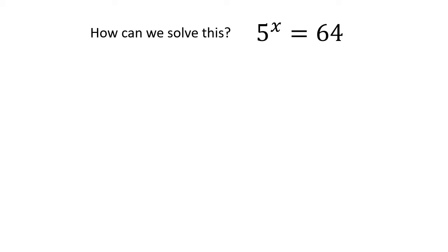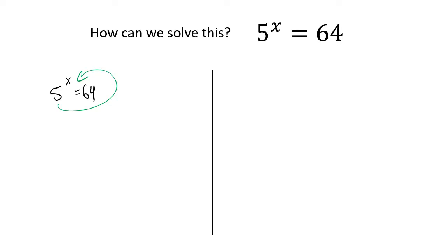So if I asked you how could you solve, based on what we've talked about so far, if I said how can we solve 5 to the x equals 64, you would say: we've got 5 to the x equals 64, and you will do the loop trick here. So you'll say that is the same thing as log base 5 of 64 equals x. And you could just type that into your calculator and you'd get the answer. That is correct, that is how you do it.